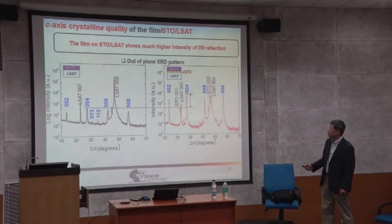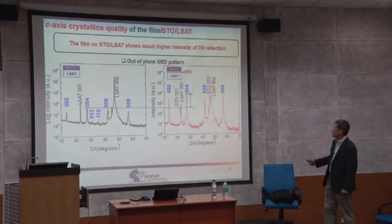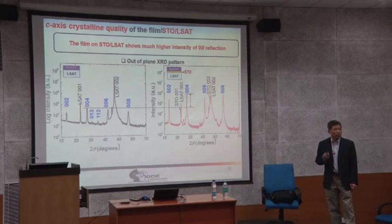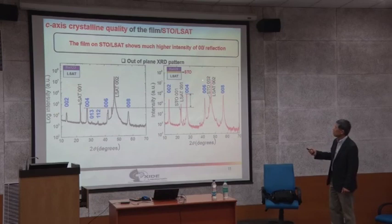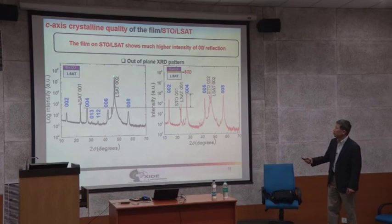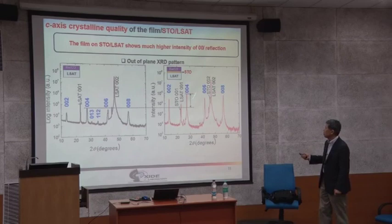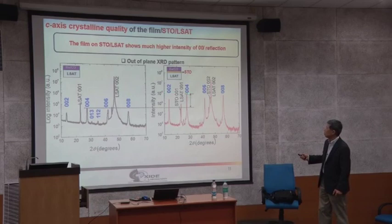The rest of them are film peaks. You see the 002, 004, 006, 008 peaks of the film. What you clearly see is: the intensity of the film peak compared to the substrate peak is very low. The substrate peak is roughly 10-20 million counts. But the film peak at 004 is only 10,000 to 30,000. Where does all the intensity go? Why is the intensity so low? You can check this with a rocking curve.